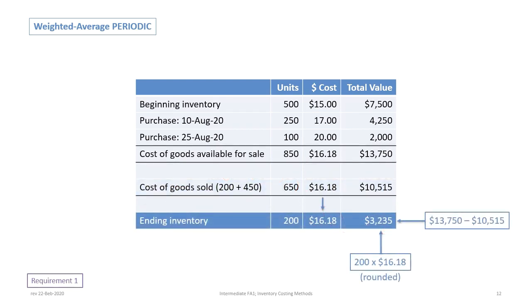Once we know cost of goods available, we subtract cost of goods sold: $13,750 minus $10,515 equals $3,235 for ending inventory. We can verify: 850 units minus 650 units sold equals 200 units remaining. Multiplying 200 units by the average cost of $16.18 also gives $3,235. It may be off by a dollar or so due to rounding, but this confirms ending inventory is $3,235, calculated either by subtracting COGS from total costs or by multiplying ending units by the weighted average rate.